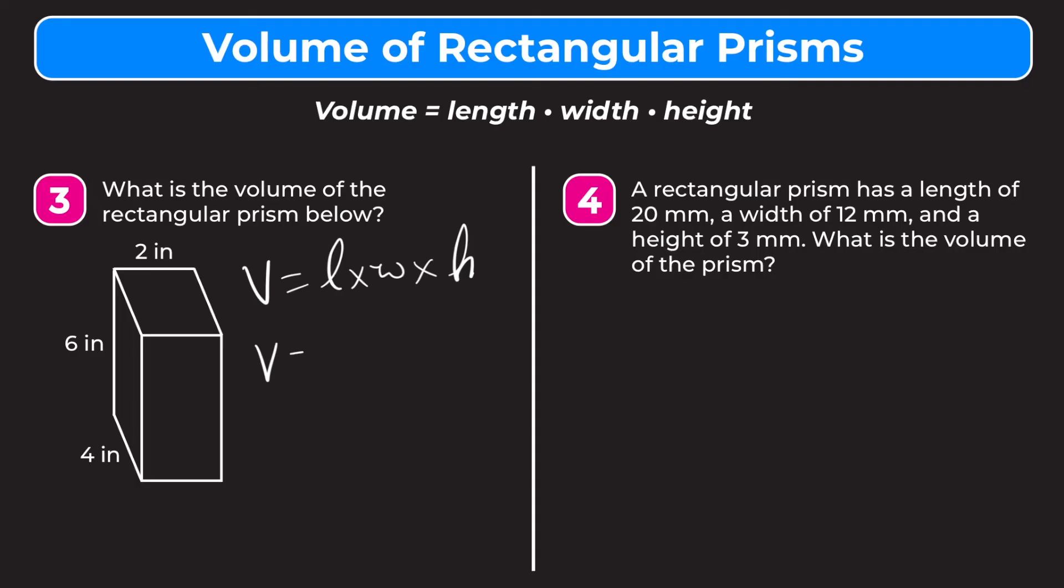Now let's plug in our values. So V equals length. I always use a larger number. So we're going to say 4 for our length times 2 for our width and then times 6 for our height. So now let's multiply these through. V equals 4 times 2 is 8 times 6.